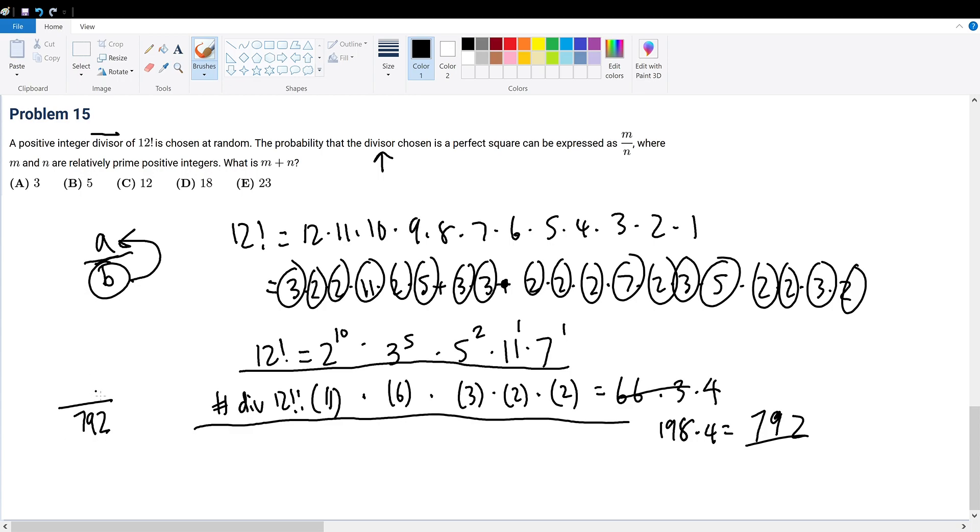Now we're trying to find m. m represents the probability that the divisor chosen is a perfect square. So of all the divisors of 12 factorial, how many are perfect squares?